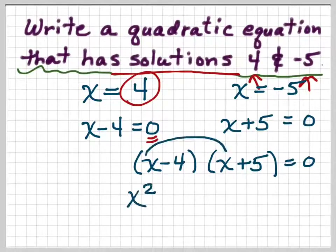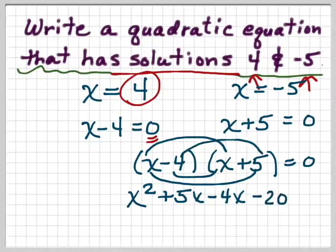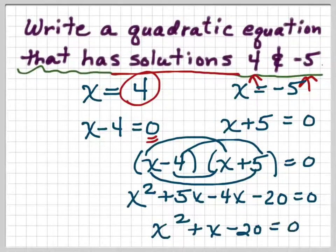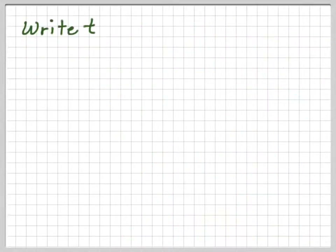So our two factors are x minus 4 times x plus 5 equals 0. Multiplying out using FOIL: first is x squared, outside is plus 5x, inside is minus 4x, and last is minus 20 equals 0. Combining the middle terms 5x minus 4x, we have x squared plus x minus 20 equals 0. We started with the answer and wound up with the equation.